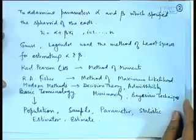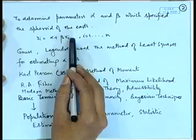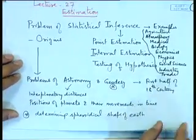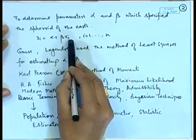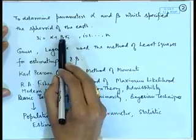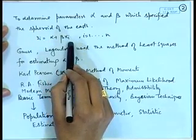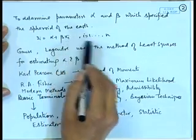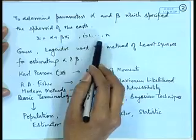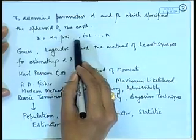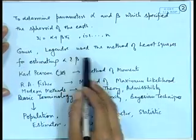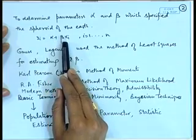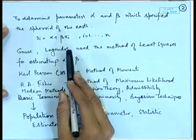Some of the earliest measurements were made to check the spherical shape of the Earth. It turned out that the data is of the form: we have observations x1, x2, ..., xn and y1, y2, ..., yn, which are related with the equation y_i = α + β·x_i — what we know today as a simple linear regression model. These are the earliest occurrences of this model. The famous mathematicians Gauss and Legendre used the method of least squares for finding out the values of α and β. So the method of least squares is probably one of the oldest methods for finding estimates of parameters.